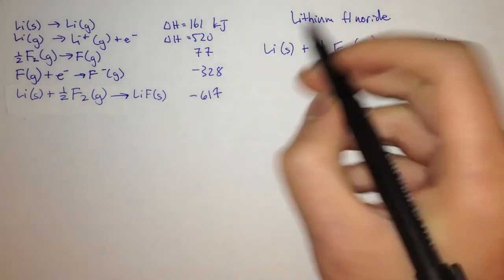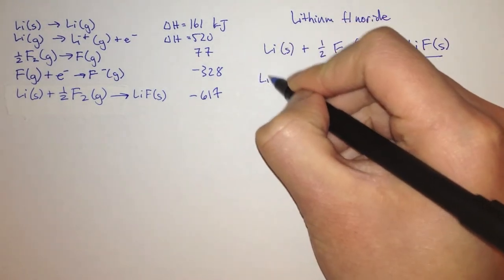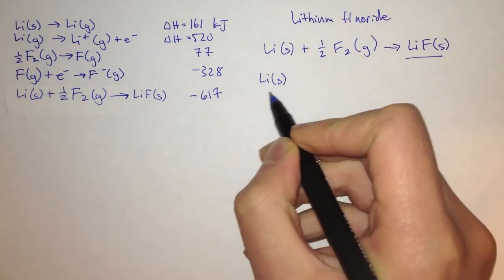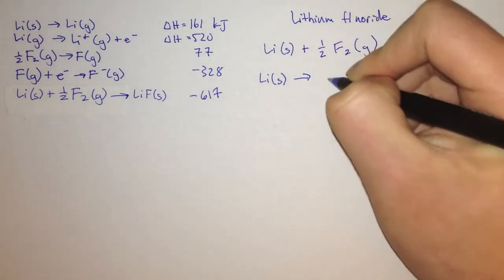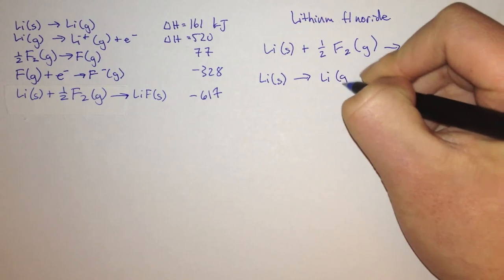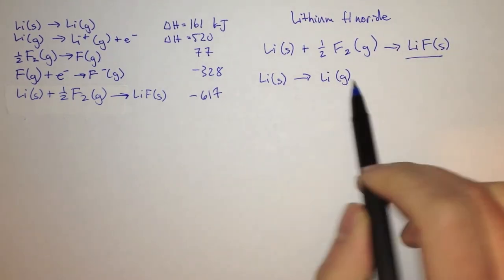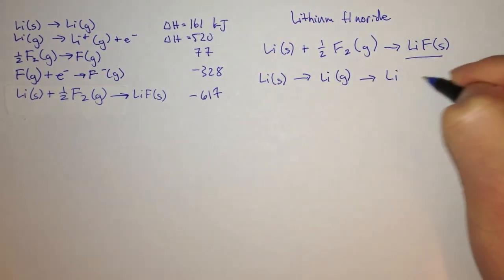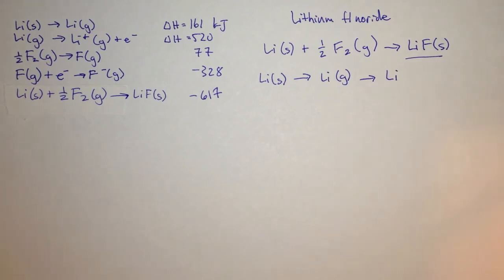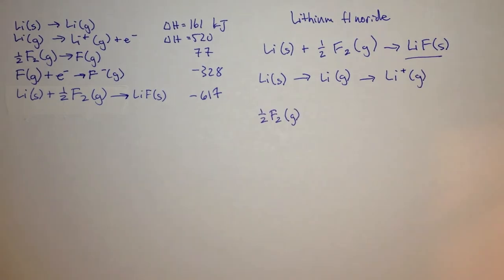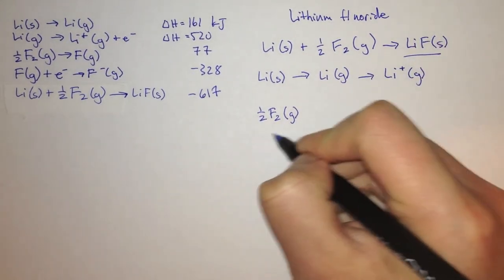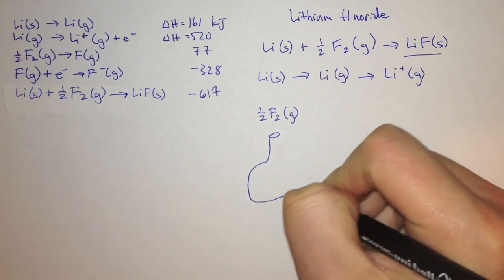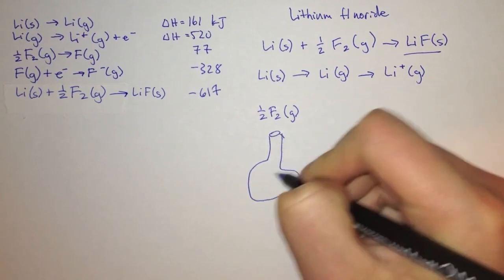First, we take lithium — it's a solid right now and it needs to be an ionized gas. So we evaporate the lithium, and then we need to take away its electron and give it a positive charge. Fluorine comes to us as a gas at room temperature.